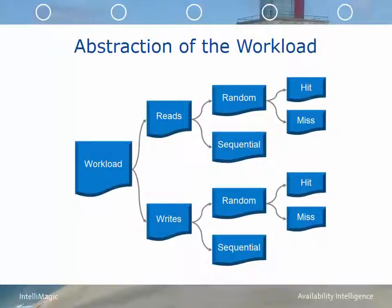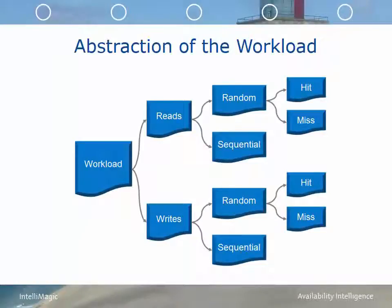An IO workload consists of the following categories: reads, which can be broken down into random reads or sequential reads, random read hits or random read misses. On the other side, we have writes, which can be random or sequential. Random writes can be random hits, meaning the record being updated is already in cache, or a random miss, meaning the track being updated is not in cache. Sequential operations have the effect of cache hits because the controllers can do prefetching, so these operations tend to have a lower response time than random operations and require less disk operations.